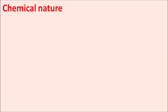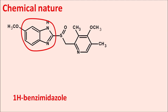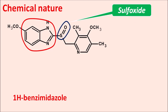Now let us see the chemical nature of this drug. This is the structure of S-omeprazole, and here we can observe one heterocyclic ring system with two nitrogens — this is 1H-benzimidazole. We can also find a sulfoxide group. Because of this sulfoxide group, S-omeprazole acts as a prodrug. This sulfoxide is converted to sulfenamide, which is the active metabolite of S-omeprazole.